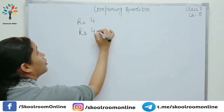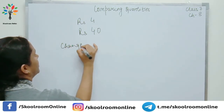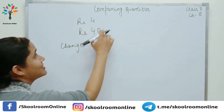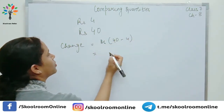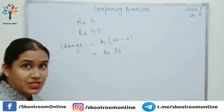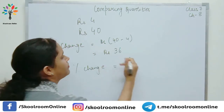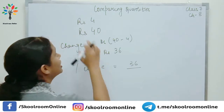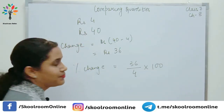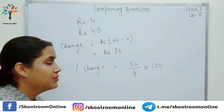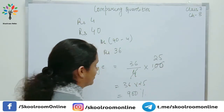तो वही चीज़ अगर मुझे मिल रही है 40 रुपीज में, तो मेरा परसंटेज चेंज कितना हो गया? चेंज कितना हुआ? इन दोनों को सब्ट्रैक्ट करेंगे — new price minus the old price — so I will get the change. So it will be 40 minus 4, which will be 36. और इसका परसंटेज निकालेंगे कैसे हम? Percentage change is equal to जो भी हमारा change आया है, upon the original amount. तो हमारा original amount क्या था? 4 रुपीज, और percentage है तो 100 से multiply करना है. 36 into 25 — 900%! मतलब तब से लेके अब तक 900% का increase हुआ है उसके price में.